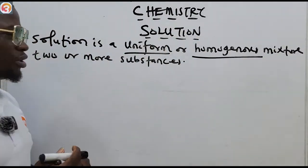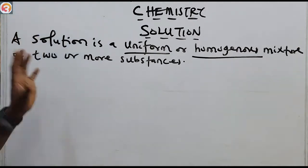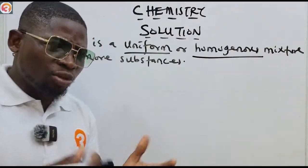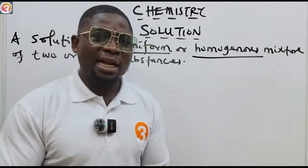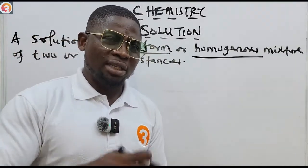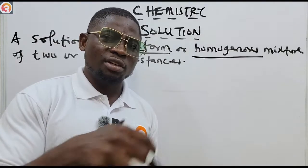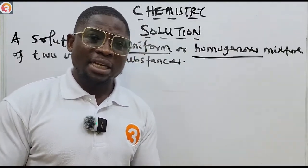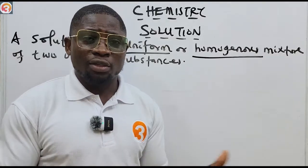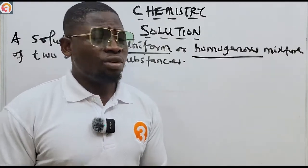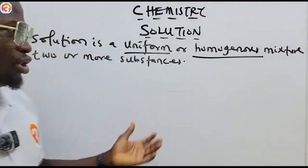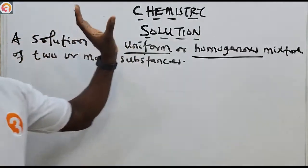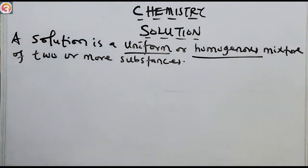Homogeneous or uniform means that when you take a solute and a solvent together — say salt poured into water and stirred — at that point you will not see the solute particles again; they will have all dissolved inside the water. That is a homogeneous mixture.